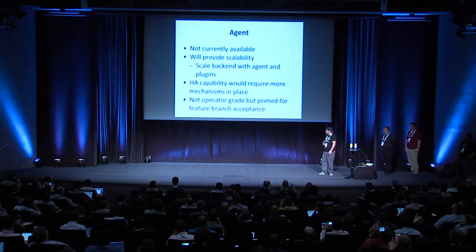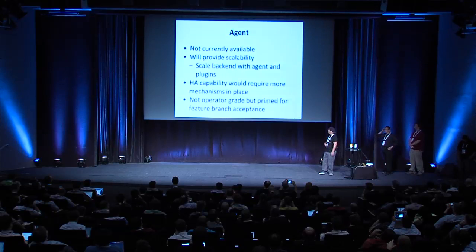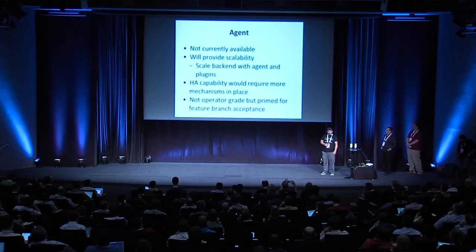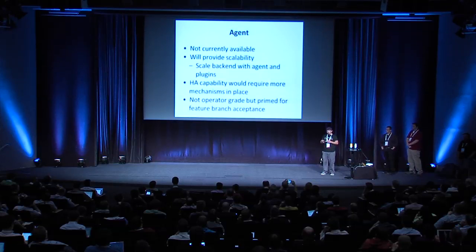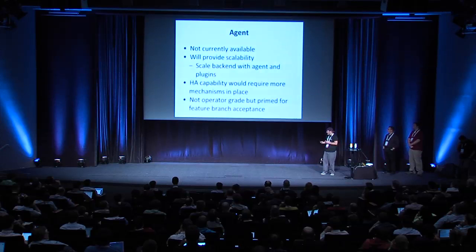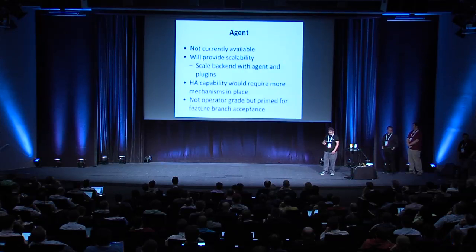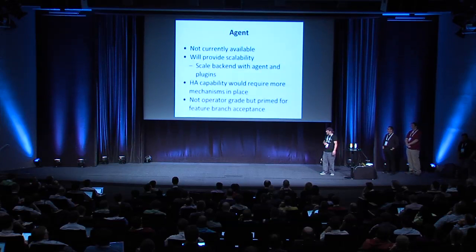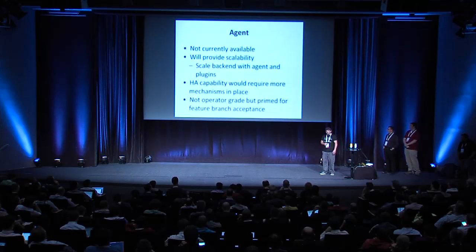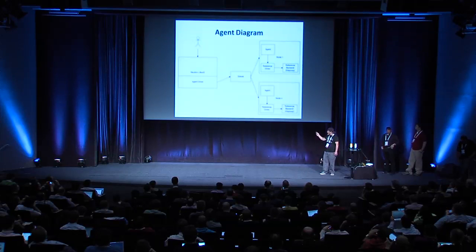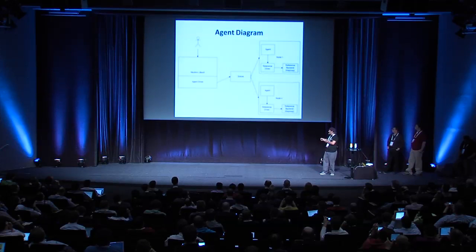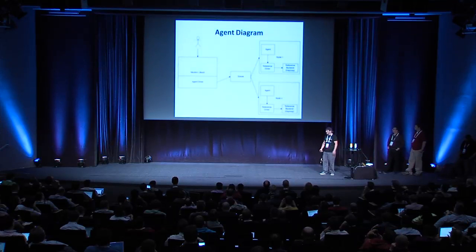Next we have our agent-based version, which we plan to do but is currently not available. It will provide some scalability — it's based off of the V1 agent, so besides adhering to the V2 data models there's not much difference. It provides scalability so you'll be able to scale out with the agent and backends. HA capabilities would require some additional mechanisms to make it highly available. This one is not really operator grade but it's definitely primed for feature branch acceptance to keep things moving with Neutron LBaaS. The agent driver communicates via a queue, and the agents on the nodes communicate back and forth so you can deploy this out over multiple nodes.